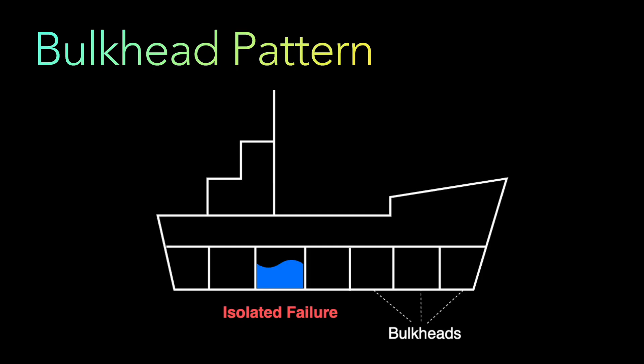So what is the bulkhead pattern? If you look at this slide, it's a ship which has multiple components. The bulkhead pattern is named after the watertight compartments on ships that basically prevent them from sinking if one part of the hull is breached. Similarly, in software systems, the bulkhead pattern involves dividing your system into isolated compartments — also called bulkheads — to limit the impact of failures and ensure that one part of the system doesn't bring down the whole system.